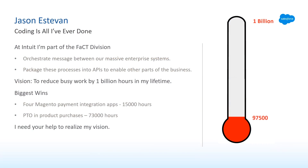My name is Jason Estevan and I'm an integration engineer. I've been programming since I was in high school and I have no plans of stopping anytime soon. At Intuit, I'm part of the FAC division — finance and compliance technology — and we orchestrate messages between our massive e-commerce systems and then package these processes into easy-to-consume APIs to enable other parts of the business. My life's vision is to reduce busy work by 1 billion hours.